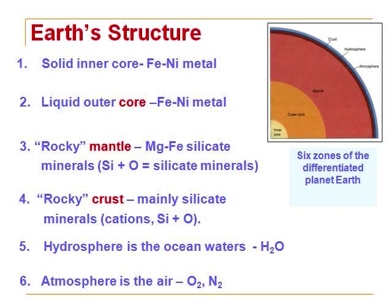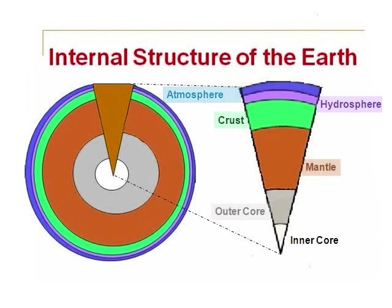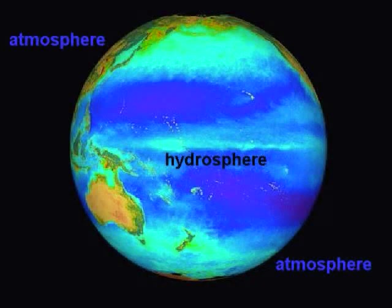Zone four is the rocky crust, mainly silicate minerals and cations which are made up of metals. It is in this zone that we find our valuable, mineable minerals. Our continents are formed from the crust. Zone five is the hydrosphere — the ocean waters which cover most of the Earth's crust. Zone six is the atmosphere, which is the air. It goes from the surface of the continents and oceans all the way up to about 100 miles into space.